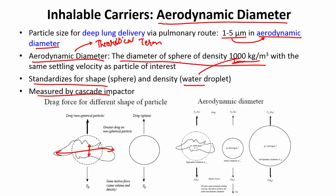If you have a particle with a density of 4000 kg per meter cubed, because the density is very high the drag is going to be lower. To compensate, you increase the size so that the aerodynamic diameter accounts for the different density and different drag. So two particles can have the same drag even though they have different densities and different physical diameters — that is what you are comparing.